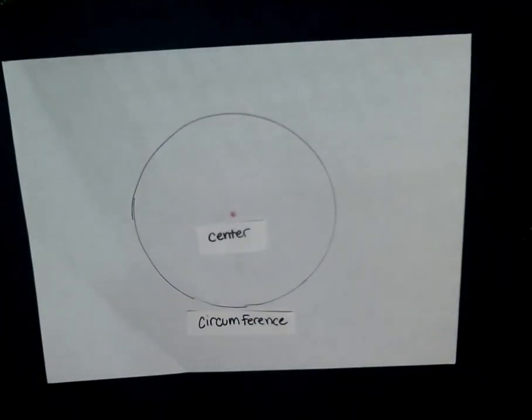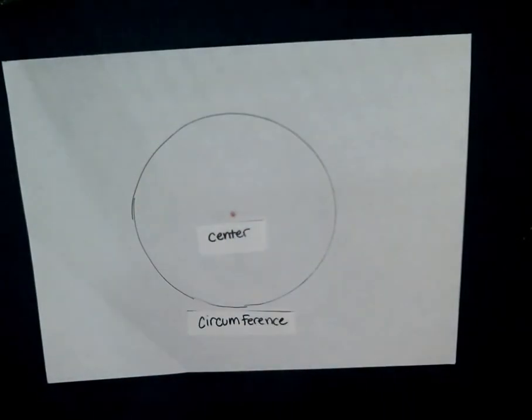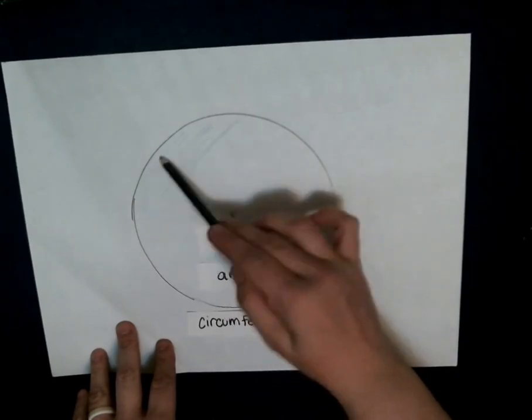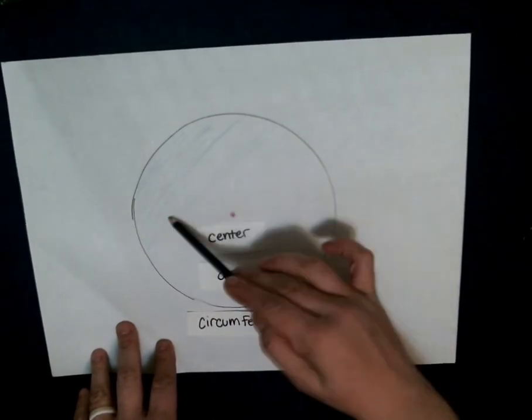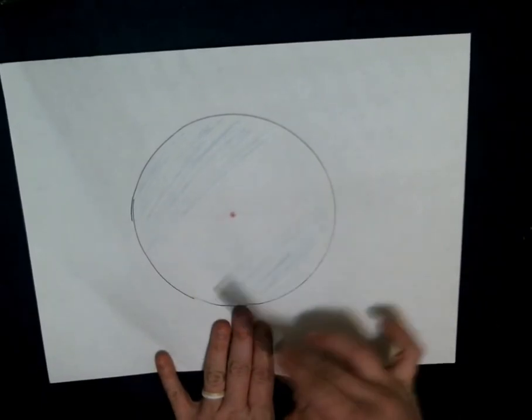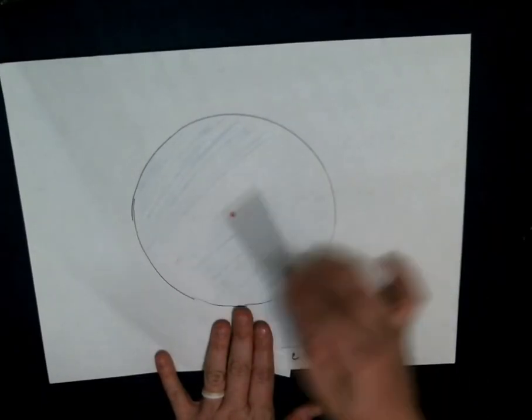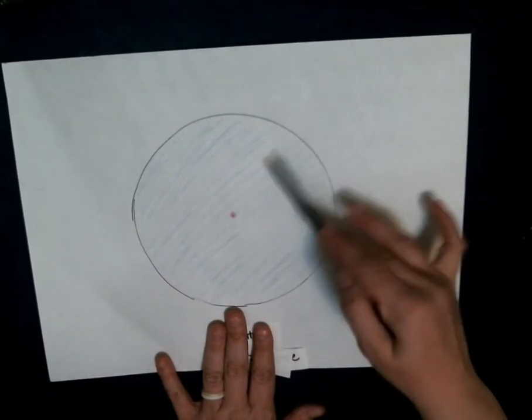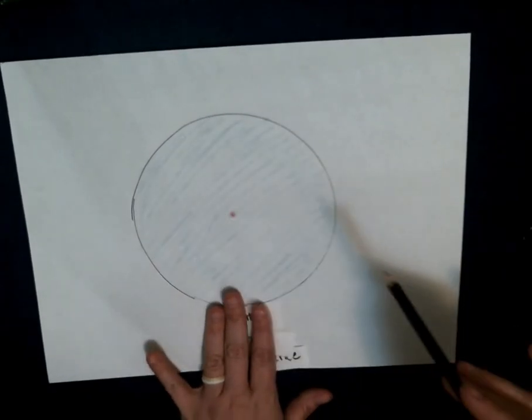And the next part is all the space inside of the circle. It has a similar name to all the space inside this rectangle. That's called the area, the space inside the whole circle. I'm going to just very carefully and lightly move my words real quick. All of this space inside this circle is called the area, the area of the circle.